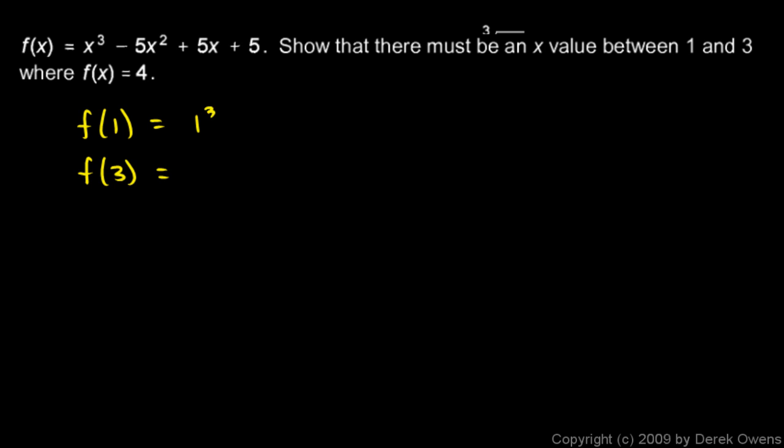Well, f of 1 will be 1 cubed minus 5 times 1 squared plus 5 times 1 plus 5. So that's 1 minus 5 plus 5 plus 5. Those just cancel out. We get 1 plus 5 is 6.